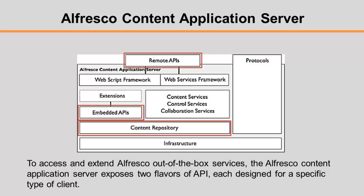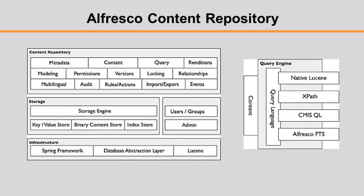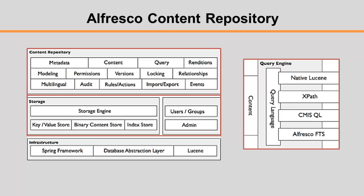The content repository is comparable to a database except that it holds more than data. The binary streams of content are stored in the repository and associated full text indexes are maintained in the Lucene indexes. The query engine and the storage engines are hooked into the transaction and permission support of the infrastructure, offering consistent views and permission access. Several query languages are exposed.